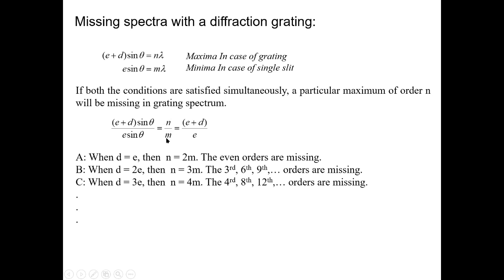So N is the order of missing spectra in the grating and m is an integer. If E = D, then N = 2m, meaning even orders (2nd, 4th, 6th, …) are missing. If D = 2E, then N = 3m, so the 3rd, 6th, 9th, 12th orders are missing. And if the slit width and spacing are such that (E + D)/E = 4, then the 4th, 8th, 12th orders are missing, and so on.